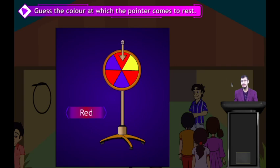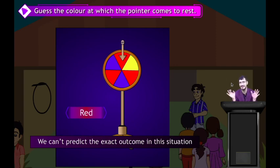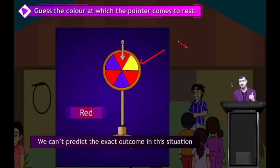It is difficult to guess — we cannot predict the exact outcome in this situation. We cannot predict the exact outcome because here you can see three colors: yellow, red and blue. So we cannot predict the exact outcomes.